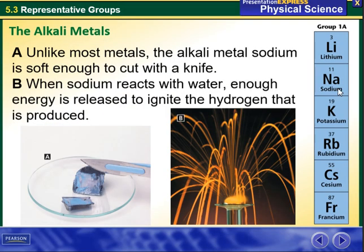The alkali metals are lithium, sodium, potassium, rubidium, cesium, and francium. Lithium is the least reactive of this group and reactivity increases going down — francium is the most reactive element of this group.